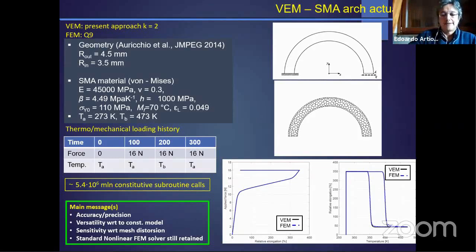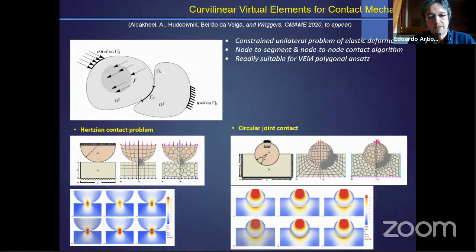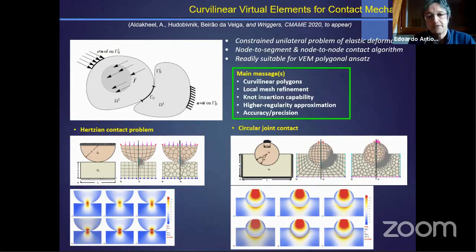So another interesting application that we have been recently working on with the group by Professor Wriggers in Hannover is the development of virtual elements for computational contact mechanics problems. Here we see a couple of standard benchmarks, the classical Hertzian contact problem and a more sophisticated problem related to an elastic indenter which penetrates a spherical substrate. We have developed curved linear virtual elements and we have exploited in this framework some of the key features granted by the method, which are local mesh refinement and the possibility of inserting nodes at the curved interface of the contact between the two bodies, which proved quite efficient in regard to available contact algorithms.